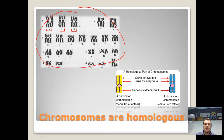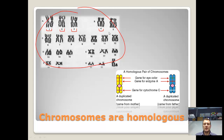A karyotype. What is basically done here is a cell in its dividing state — because you can't really see the chromosomes until they've condensed, and they only condense during cell division — is taken, a photograph is taken under a microscope, and then using a computer, the different chromosomes in the photograph are moved around until they're arranged in pairs. They can tell that they are pairs because they look similar, and the reason why they look similar is because they actually carry the same genes. So here's a homologous pair of chromosomes.